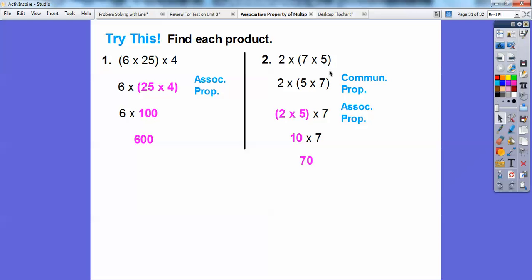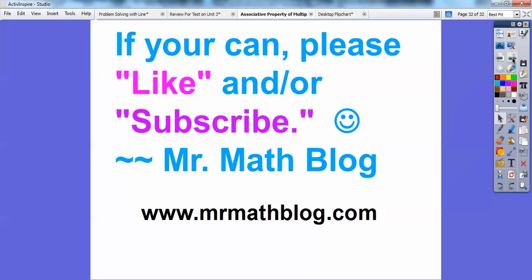We would have got 70 if we would have done 7 times 5 first and then multiplied that times 2, but it's easy if you can see some good targeting numbers to multiply and move around your parentheses by the associative property or the commutative property, and it just makes these problems a lot faster. All right, you guys, take care.